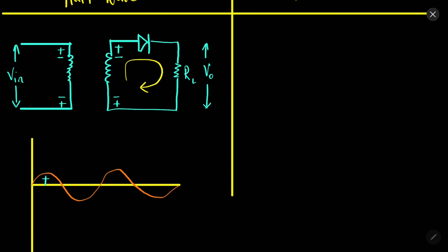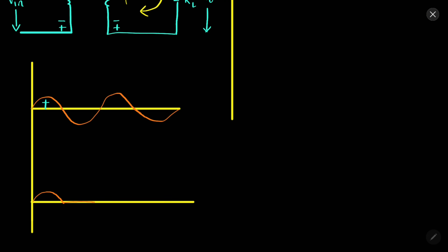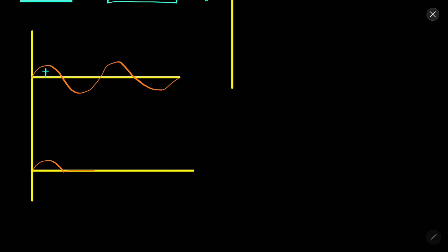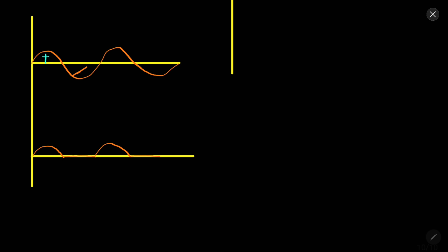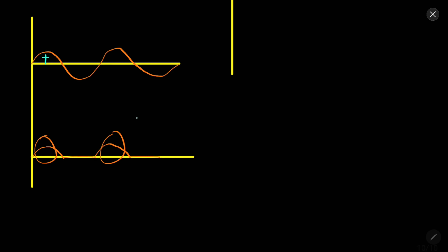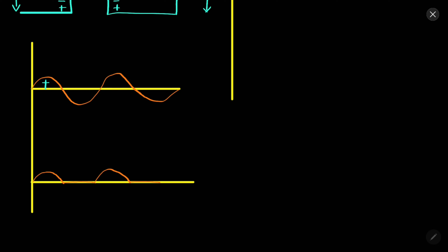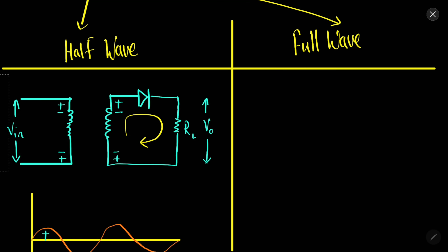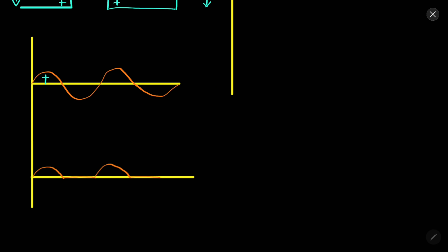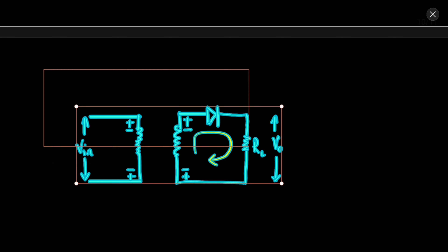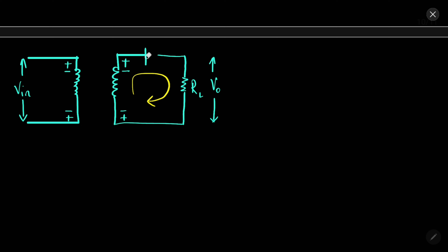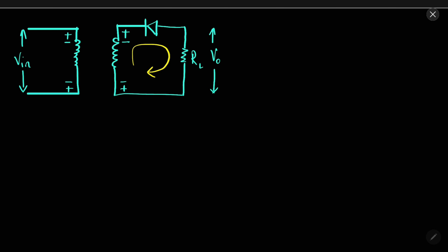Then again the positive cycle will come and we will get the positive cycle output as before. In the negative cycle we will not get any wave. This is why it is called half-wave rectification — half of the waves are cut off and we only obtain waves in one particular direction. In this case, only positive cycles are available and negative cycles are cut off. If we change the direction of the diode, then the negative cycle will be present and the positive cycle will be cut off.